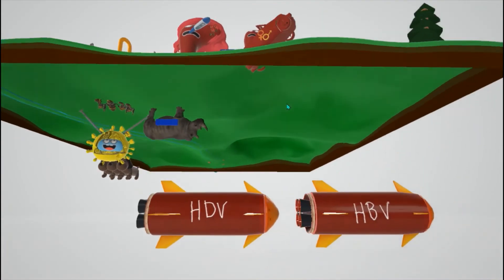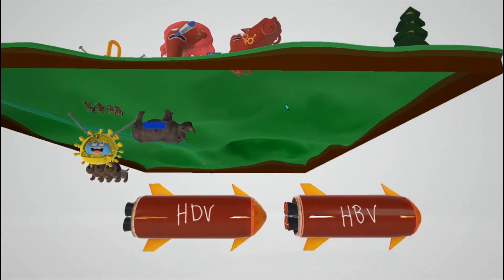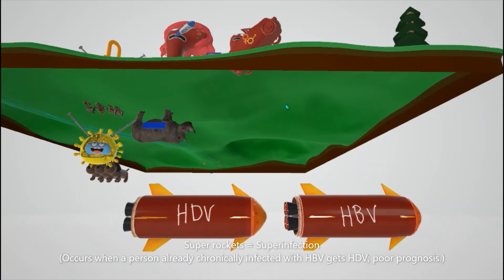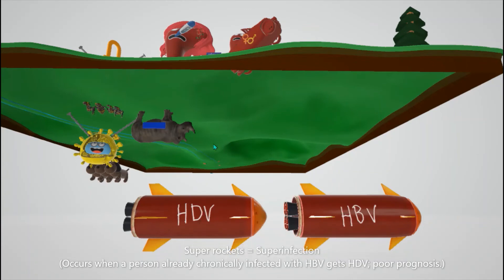We have a super rocket here to help remember the superinfection — that's a really bad prognosis. That's when HDV follows HBV. When HBV and HDV have a co-infection, that's not as bad a prognosis. But when HDV follows HBV — represented by two rockets with HDV behind HBV — the prognosis is really bad.